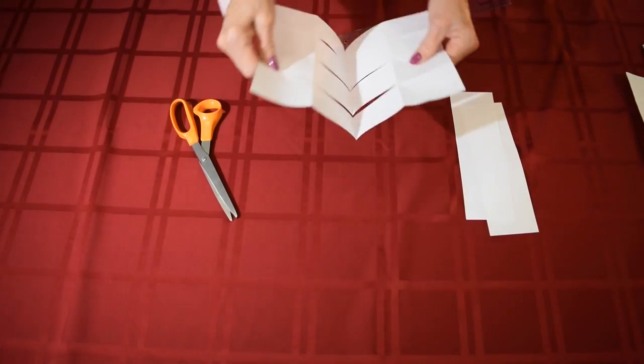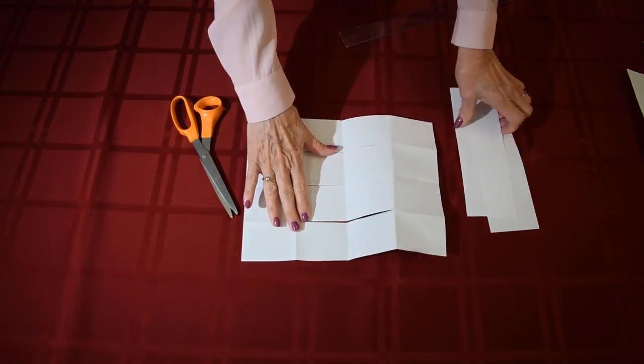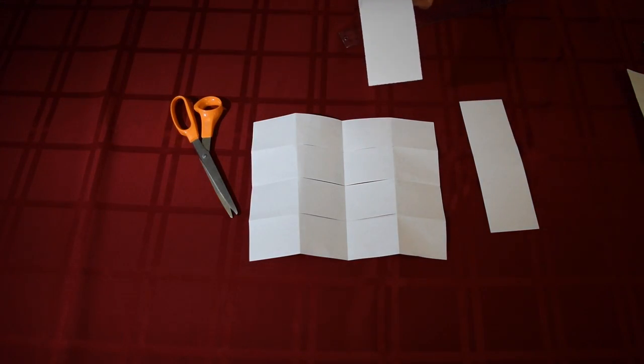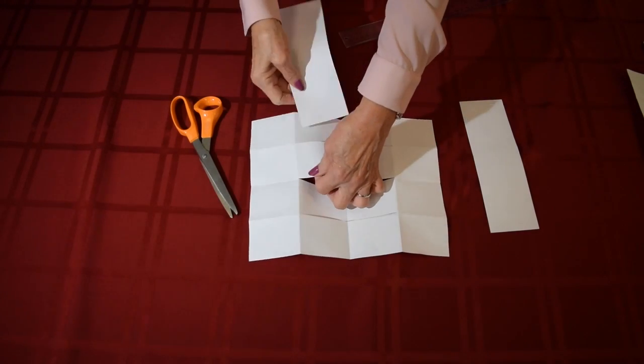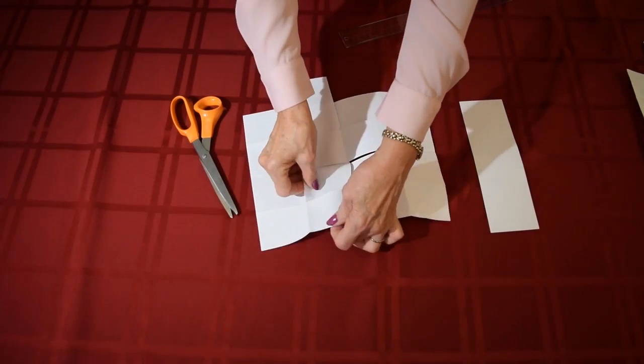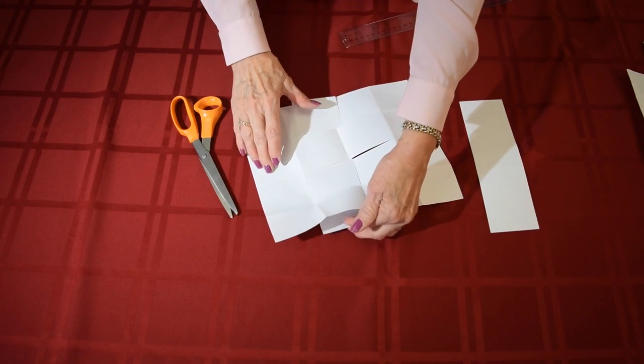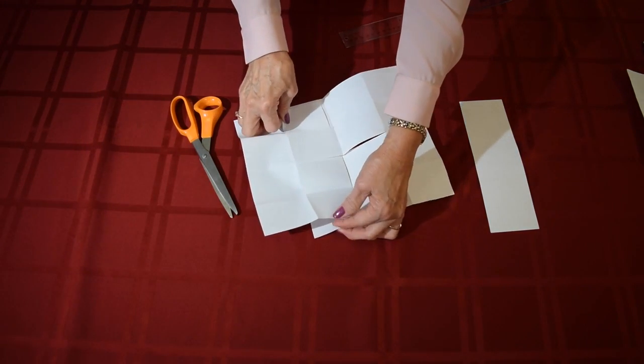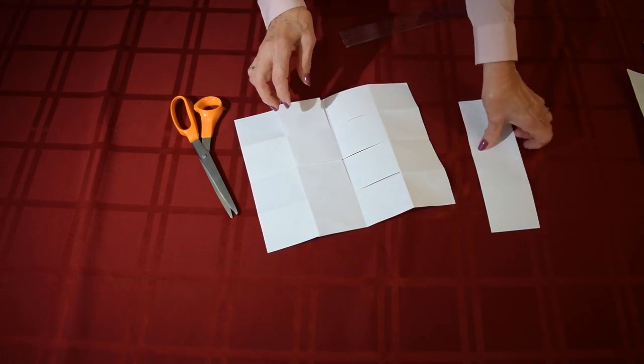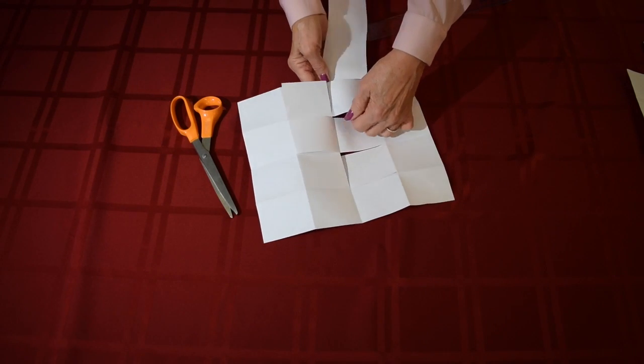Then you are going to open it up and using your two strips you will be weaving in and out of your paper starting on one side of the paper. On the other side you are going to go over and under, over and under, and then the opposite you will start underneath with the second one.